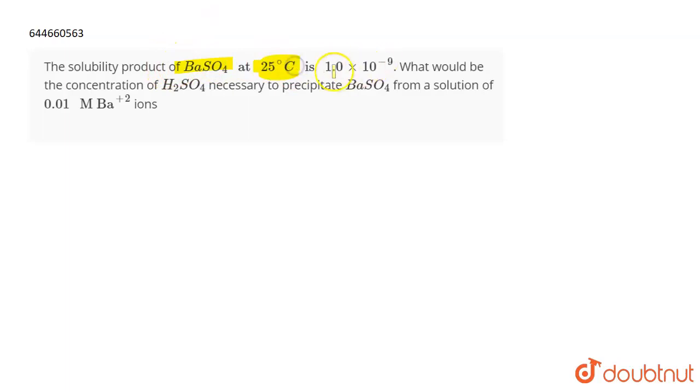BaSO4 at 25 degrees Celsius is 1.0 × 10^-9. What would be the concentration of H2SO4 necessary to precipitate BaSO4 from a solution of 0.01 molar Ba²⁺ ions?